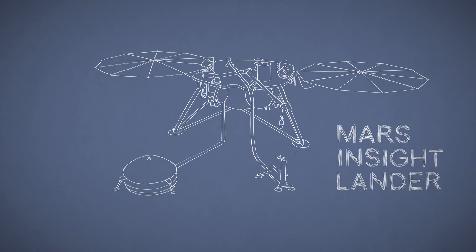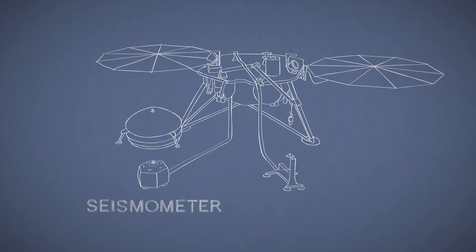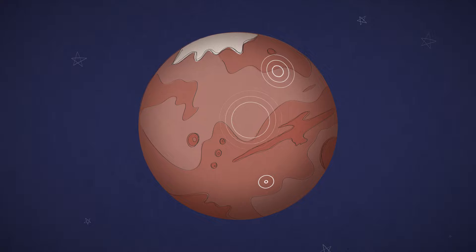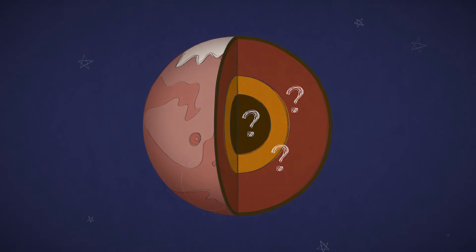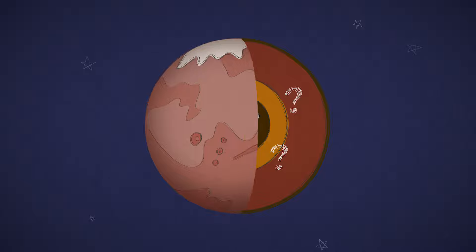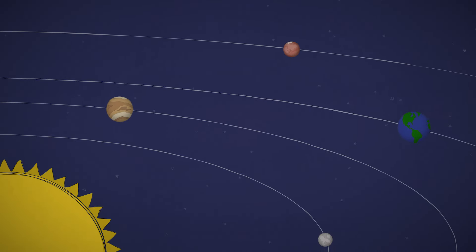NASA's InSight Lander carries a super-sensitive instrument to measure Marsquakes and could detect dozens of them during its mission. Each one can tell us a lot about what's going on inside that mysterious red planet, maybe about how all the rocky planets came to be.